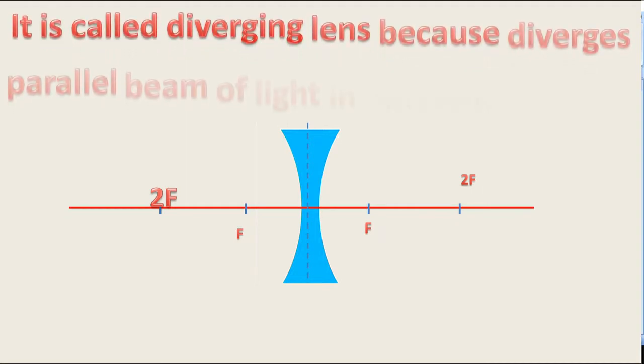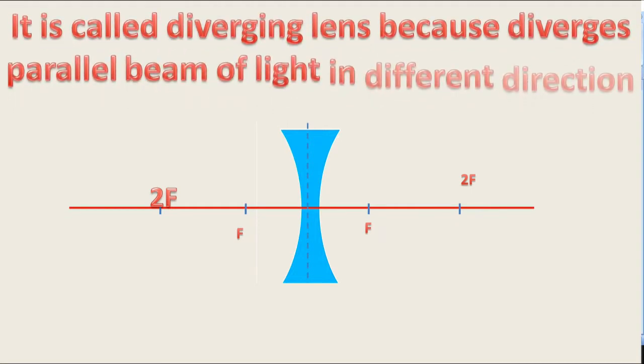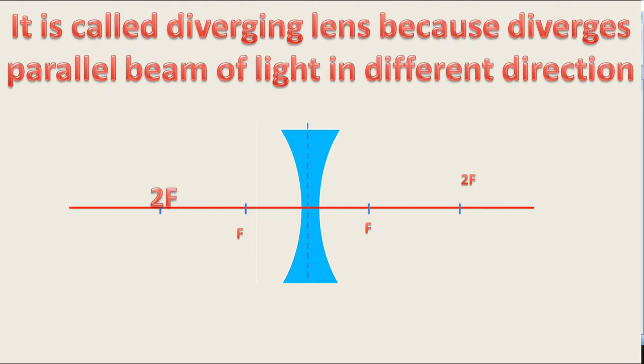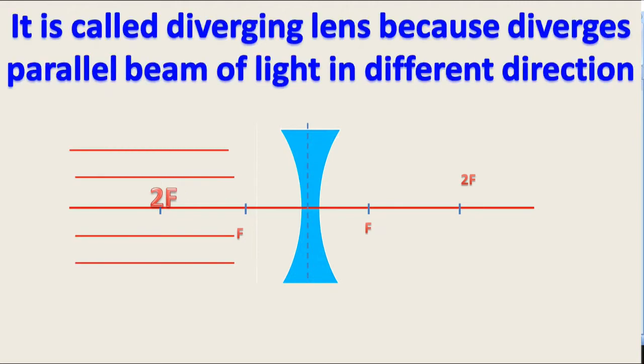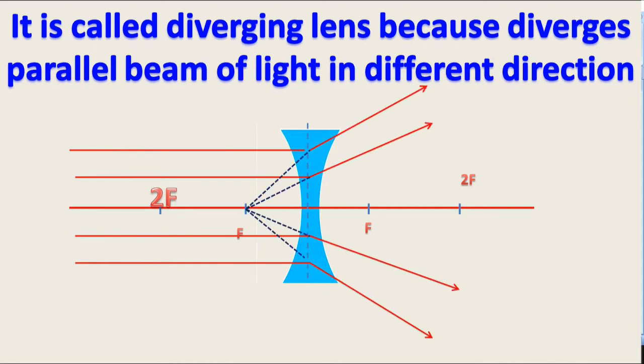It is called diverging lens because it diverges parallel beam of light in different directions from principle of focus.